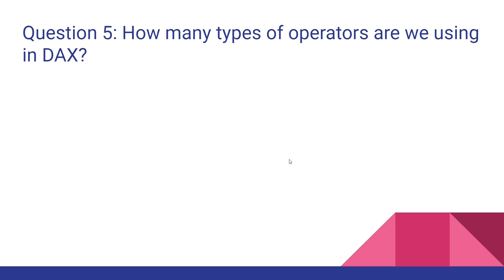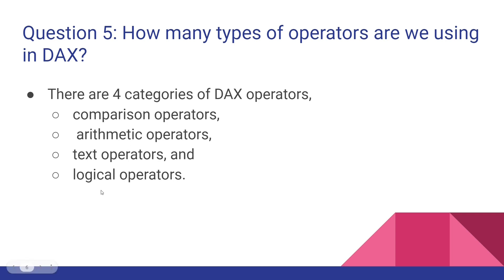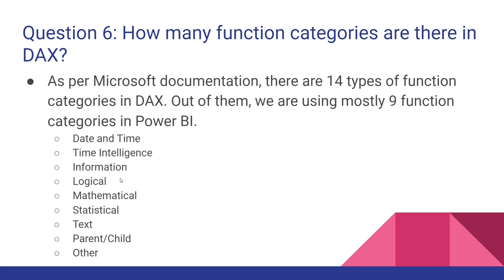How many types of operators are we using in DAX? There are four categories of DAX operators: comparison, arithmetic, text, and logical. How many function categories are there in DAX? As per the Microsoft documentation there are 14 types of function categories. There could be some new categories, so go through the Microsoft documentation before going to the interview. Mostly we are using nine function categories.